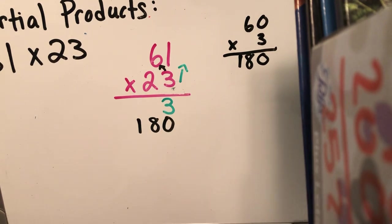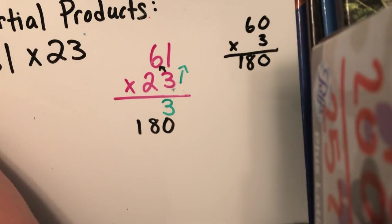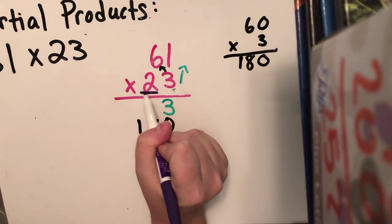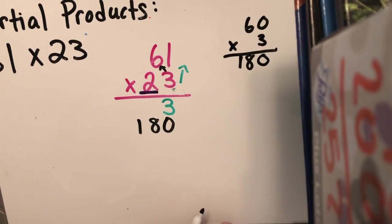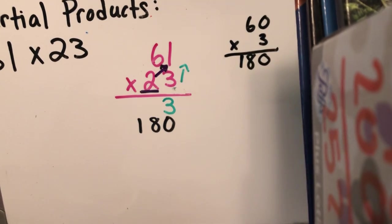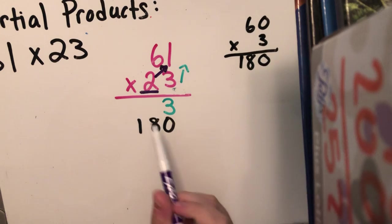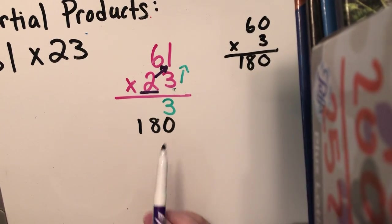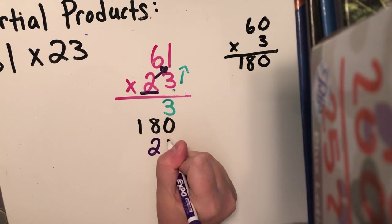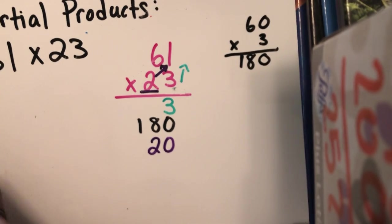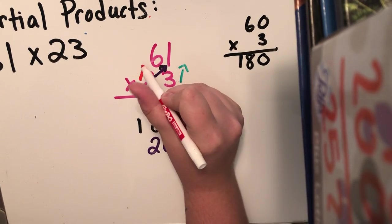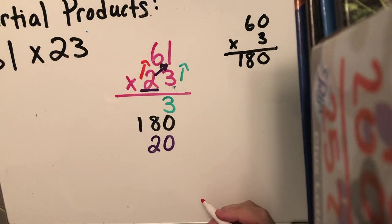Now I'm gonna erase that little line telling me where I am because I am now going to the tens place. I was in the ones, now I'm in the tens. And I'm gonna go across to the ones. So really, this is saying 20 times one is what? 20 times one, anything times one is itself. So it's really gonna be 20.